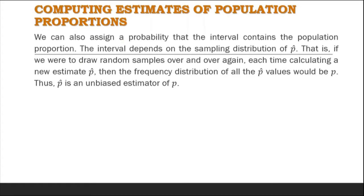We can also assign a probability that the interval contains the population proportion. The interval depends on the sampling distribution of p-hat — that is, if we were to draw random samples over and over again, each time calculating a new estimate p-hat, then the frequency distribution of all the p-hat values would center on the population parameter p. Thus, p-hat is an unbiased estimator of population proportion p.